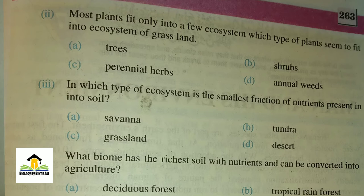MCQ number three: In which type of ecosystem is the smallest fraction of nutrients present in the soil? A) savanna, B) tundra, C) grassland, D) desert. The right answer for this MCQ is D, desert.